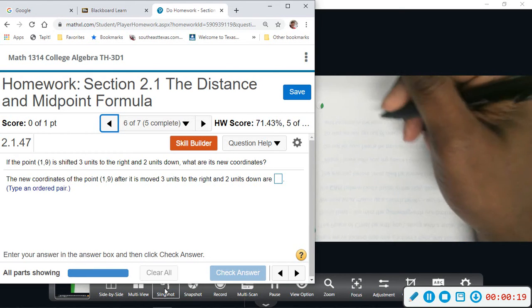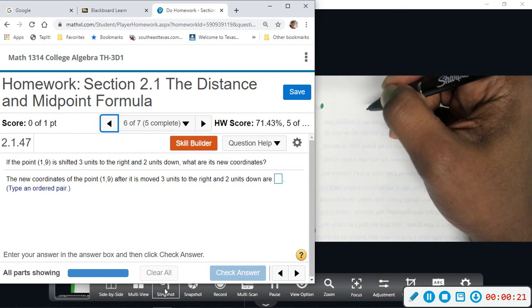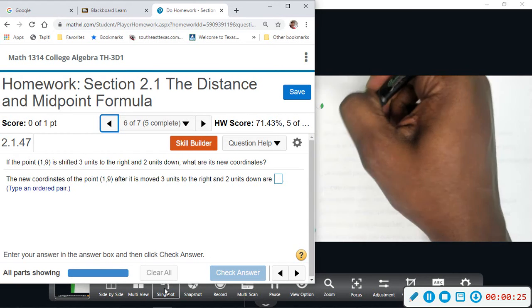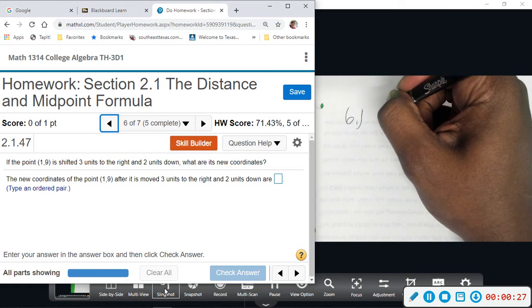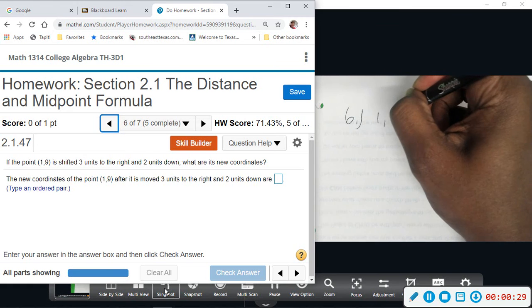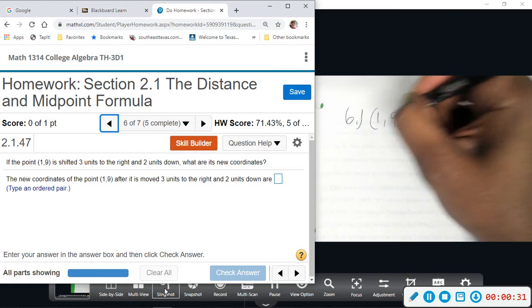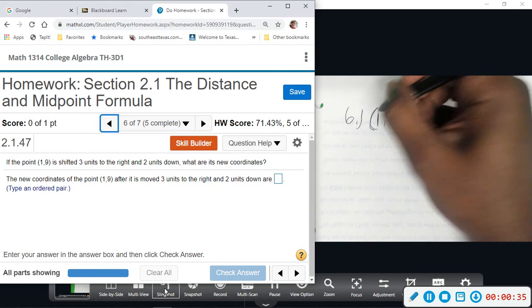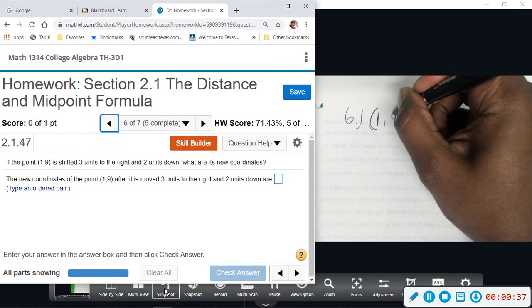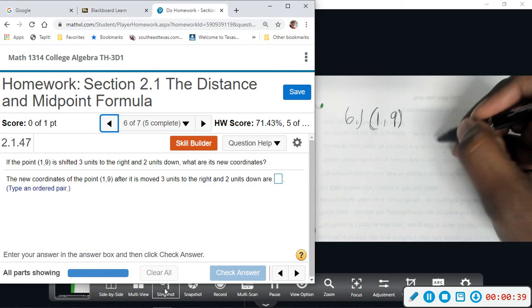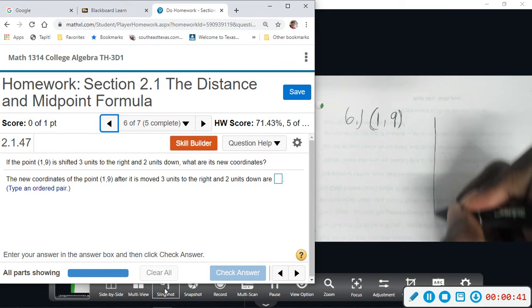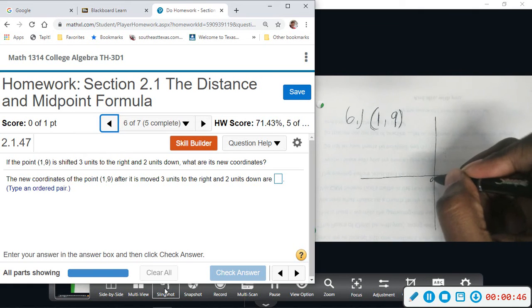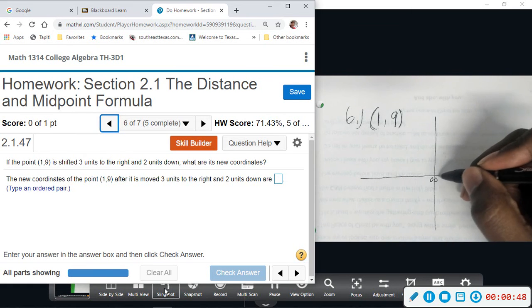This problem is going to help you get prepared for translations or transformations of graphs. But let's start with the point that we have, which is (1, 9), and talk about what this means to get shifted to the right and down. So let's think about a coordinate grid starting from (0, 0).